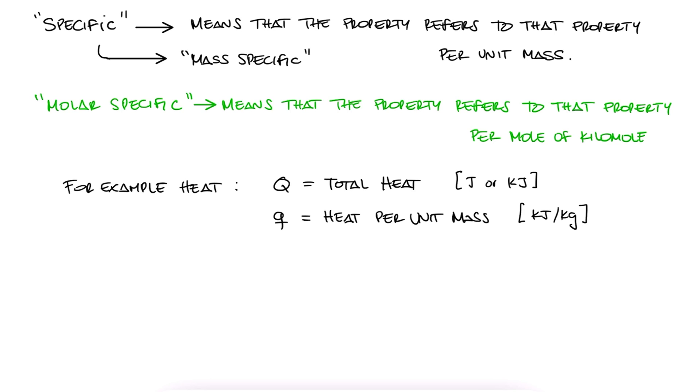Finally, if we add a dot to any of these variables, like work, heat, mass, it means that we are referring to flow. Capital Q dot would be the total heat flow, meaning the total heat q per second.